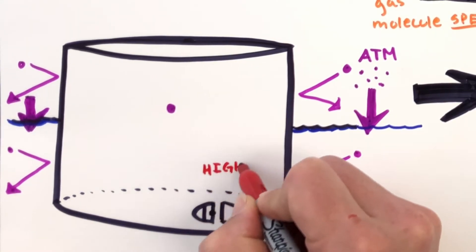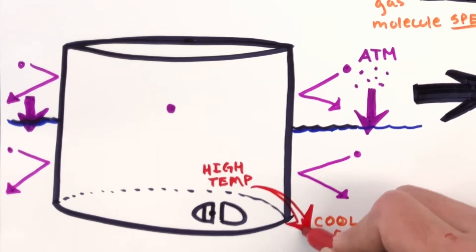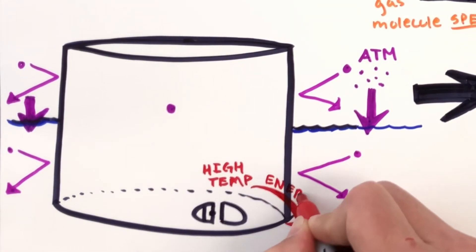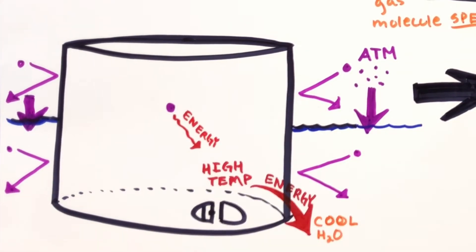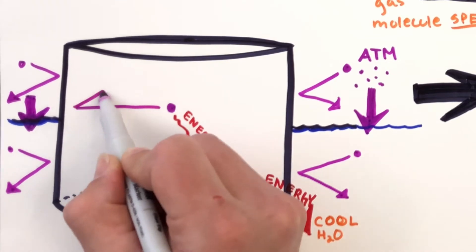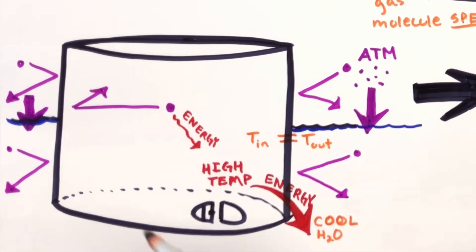So the high temperature inside of the can is going to want to flow to the low temperature outside cool water. And the same with our gas molecule, it's going to give its high energy to the low energy water, which is going to make our gas molecule slow down. So the temperature inside is going to get to where it equals the outside, so the speed inside will equal the speed outside.